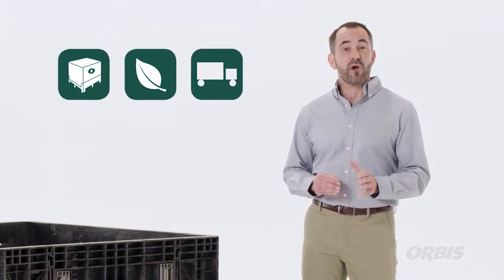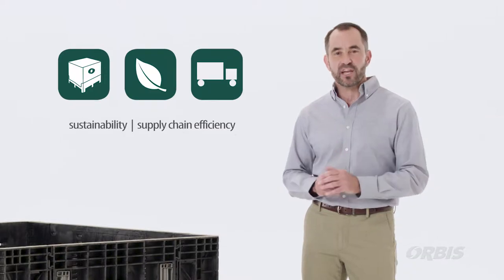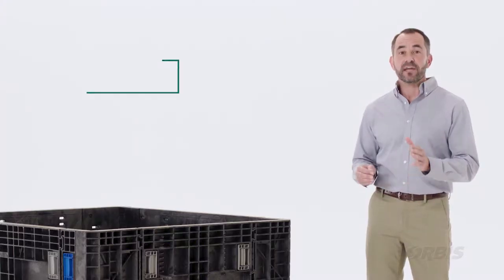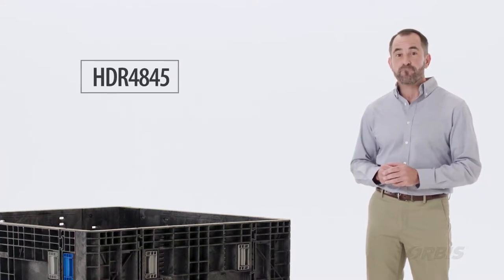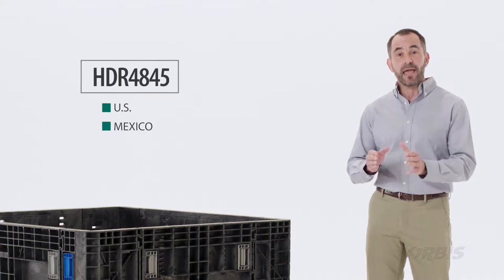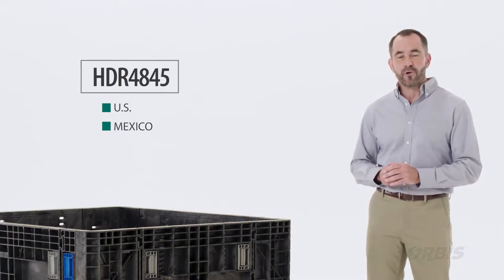The HDR BulkPak offers design advantages that drive sustainability and supply chain efficiency. These robust containers stack when full for warehouse optimization and collapse when empty providing freight cost savings. All heights of the HDR 4845 BulkPak series are manufactured in both the United States and Mexico for inbound freight cost savings.